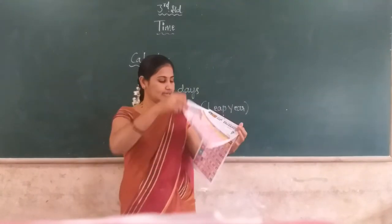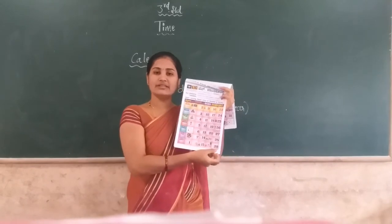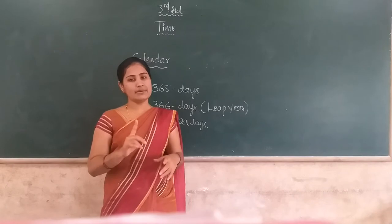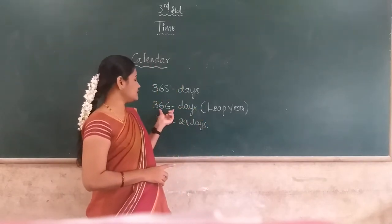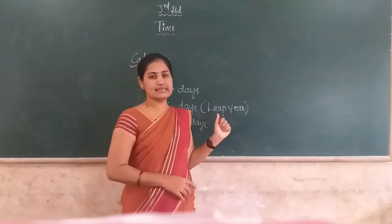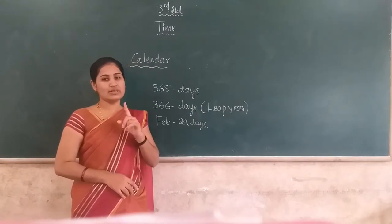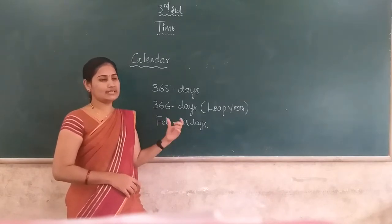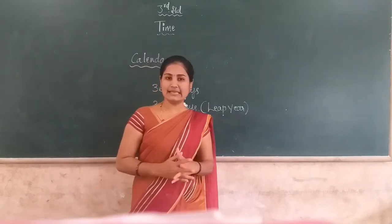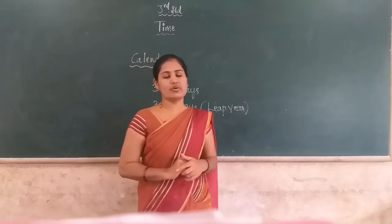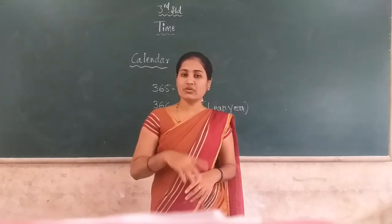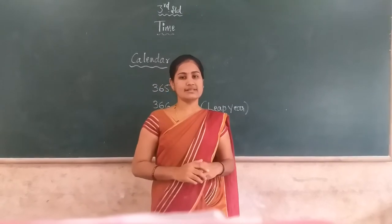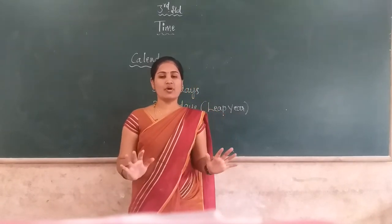For example, the 2020 calendar has February with 29 days, so 2020 is a leap year. Commonly there are 365 days in one year, but every four years once there are 366 days. That year is called a leap year because February has 29 days — one extra day is added. Therefore, the leap year comes every four years once.